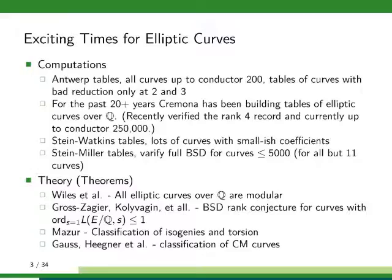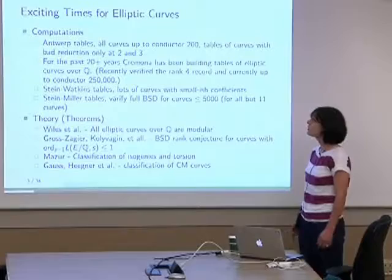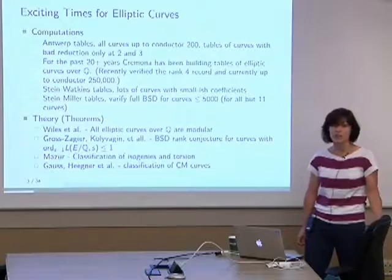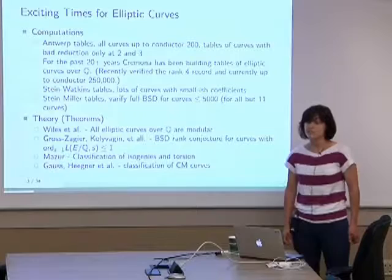Recently there's been a lot of work for elliptic curves over Q. Starting many years ago, there were the Antwerp tables, where they systematically computed all elliptic curves up to conductor 200, and also looked at curves that had bad reduction only at 2 and 3. For the past 20-plus years, Cremona has been doing his tables going through elliptic curves by conductor.